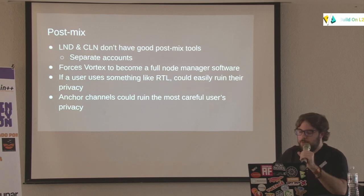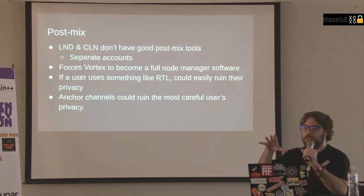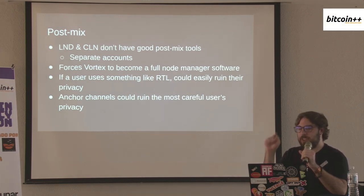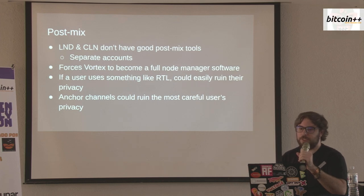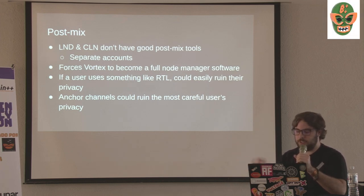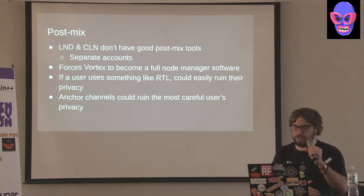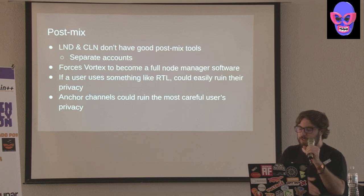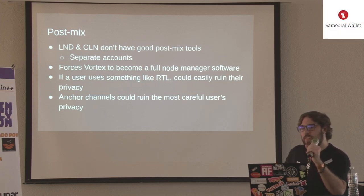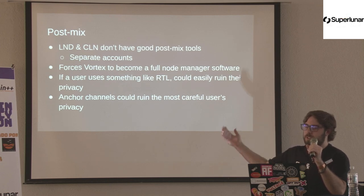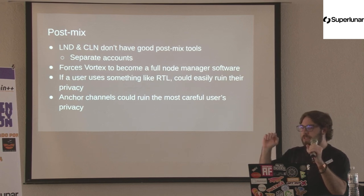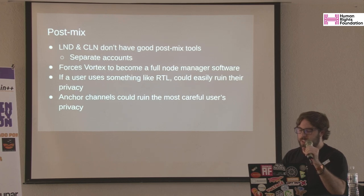Ride the Lightning and ThunderHub are great, but the problem is if you're coin-joining these funds, they won't be aware that you coin-joined previously. You could do all this perfect coin-join work, then go into RTL and hit send, and it just sends without knowing any of that, merging the wrong UTXOs or opening channels with the wrong UTXOs. Vortex would need to become full node manager software to handle everything. Even coin control in RTL won't know the anonymity set you have saved in your Vortex database, so it still isn't a total solution.